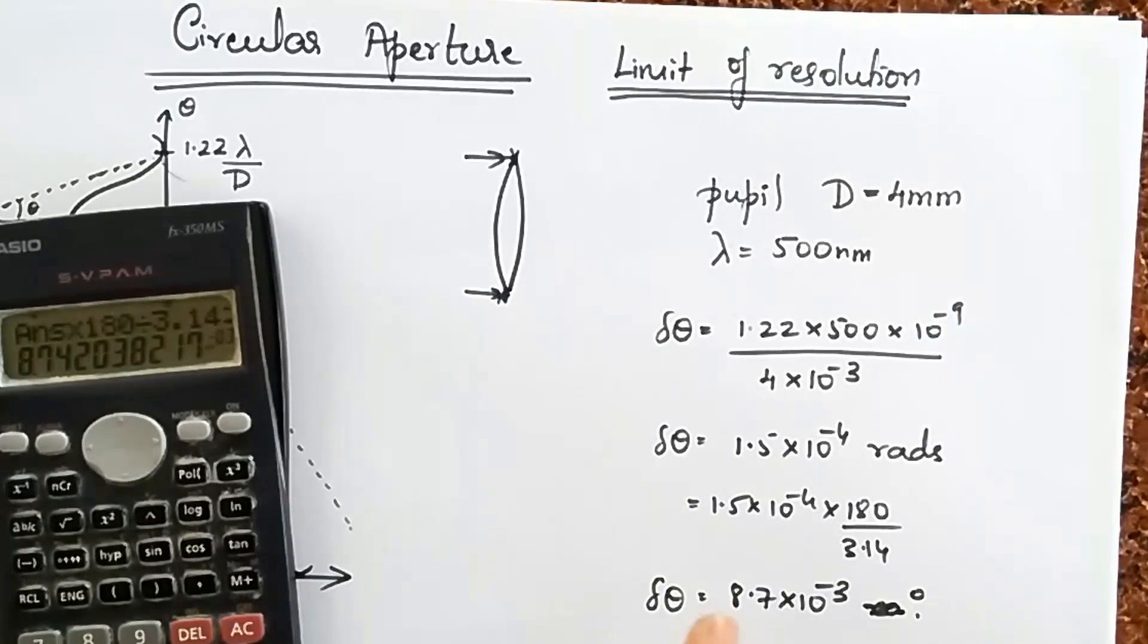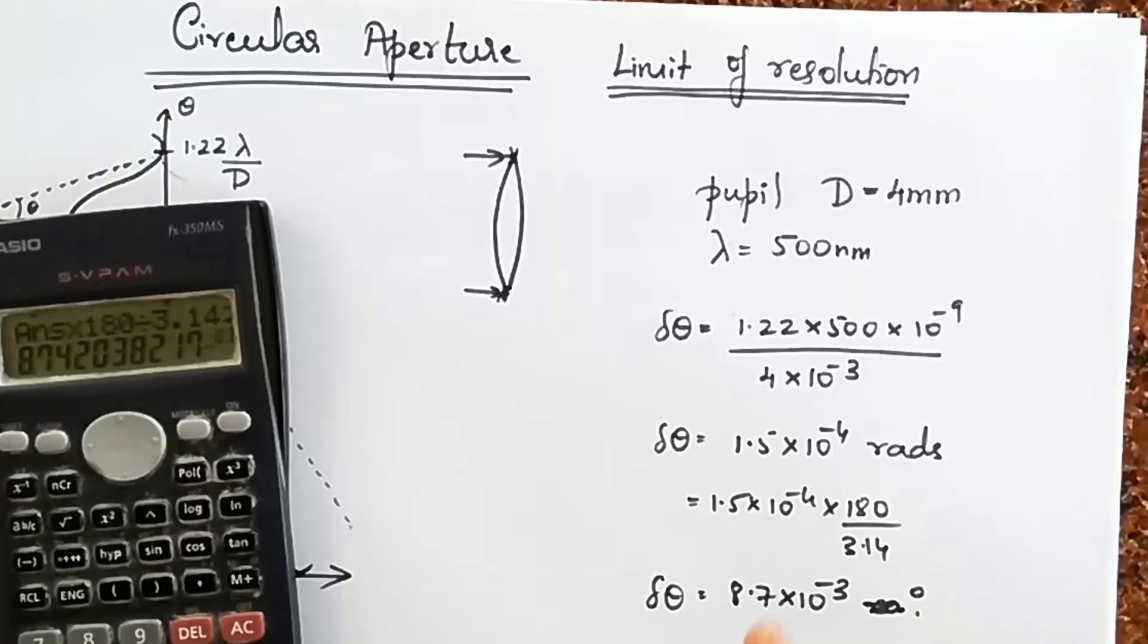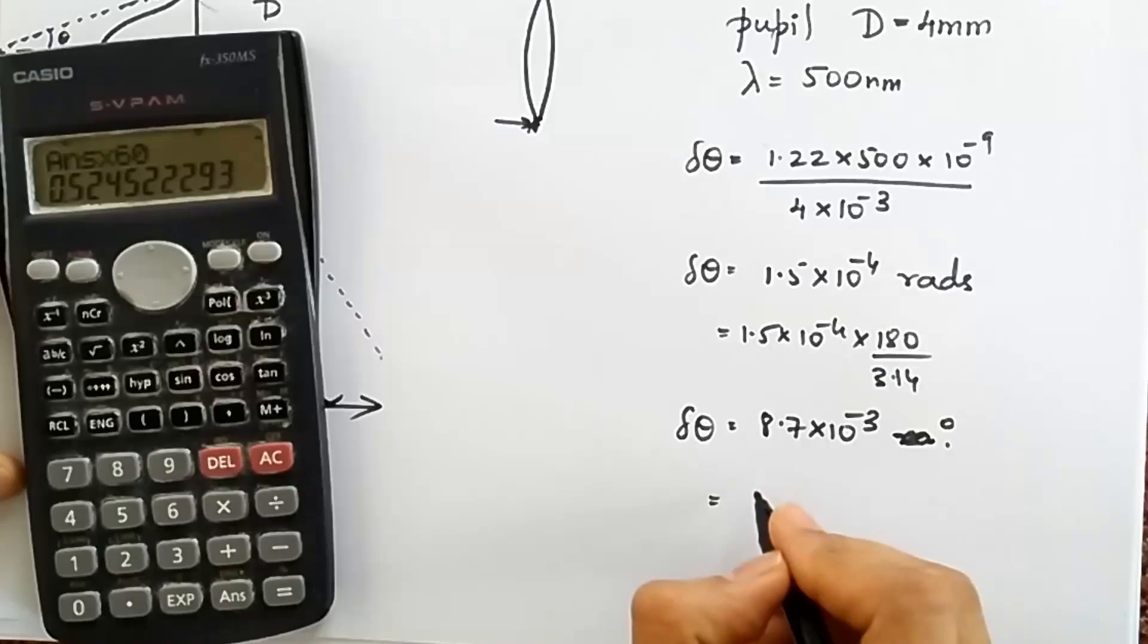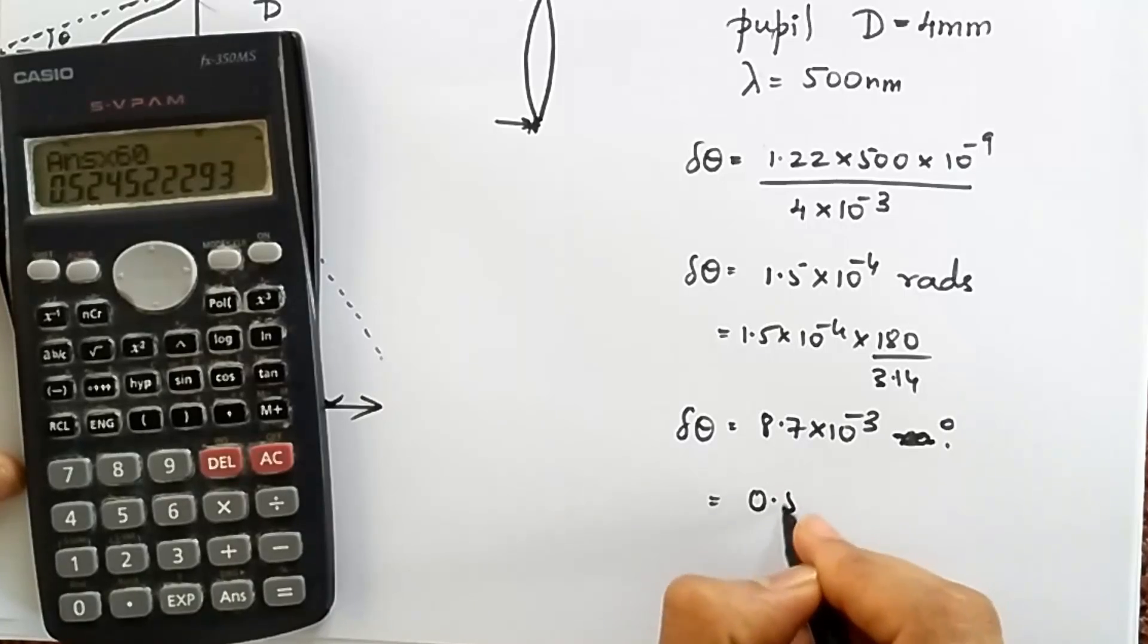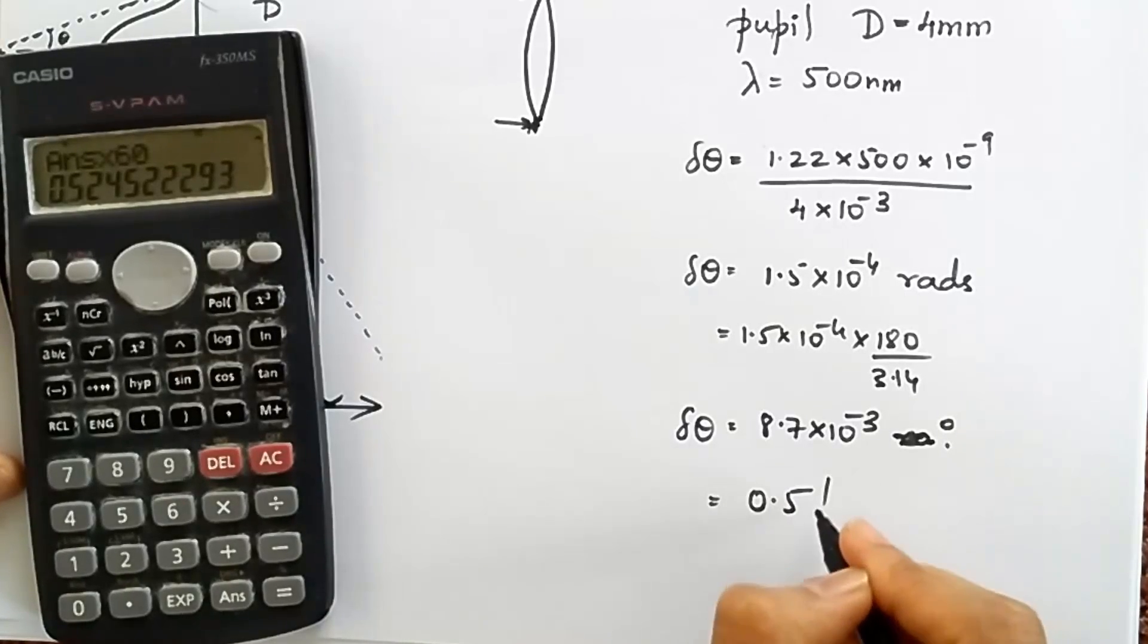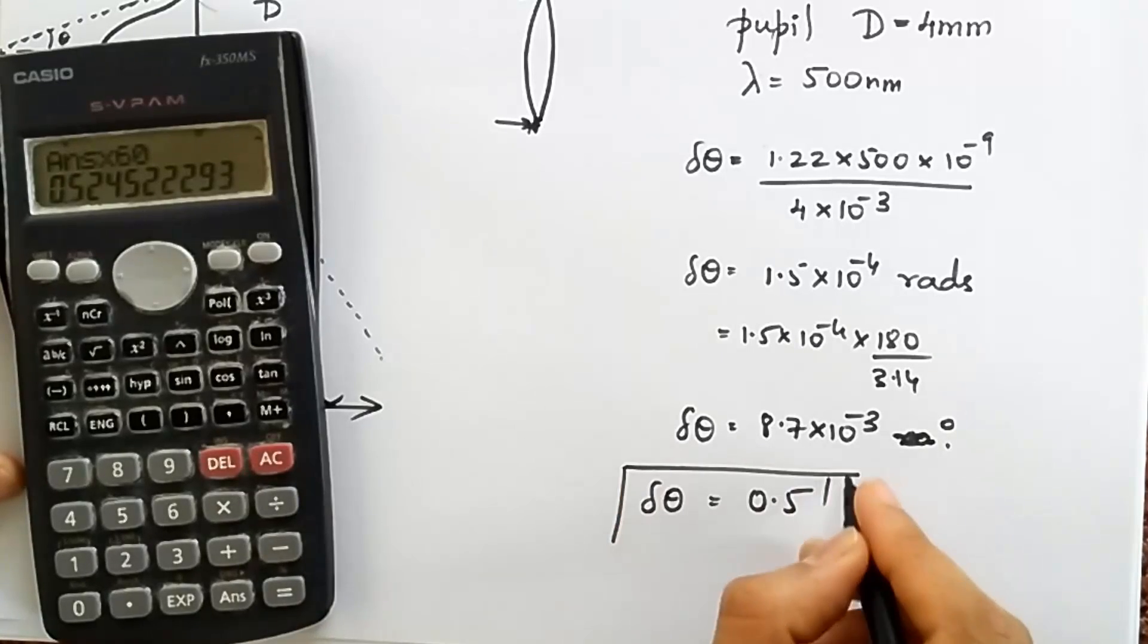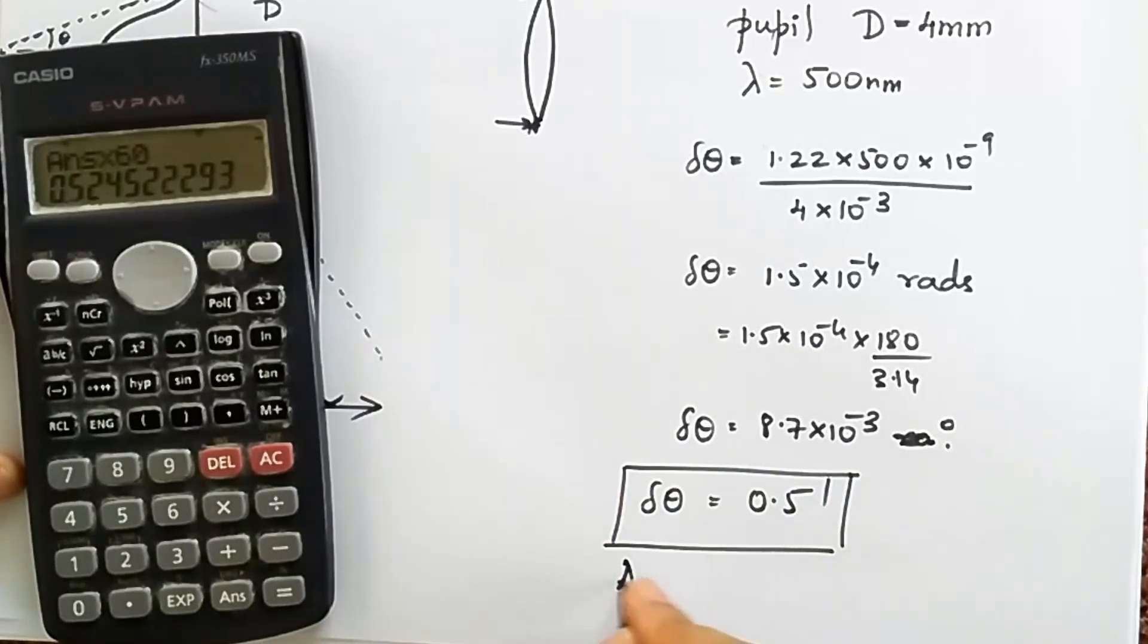Again, this is too small to comprehend. So let's convert that into minutes. To convert into minutes just like how you convert hours into minutes you multiply by 60. So this number you multiply by 60 and you get about 0.5 minutes. That is the limit of resolution of an average human eye.